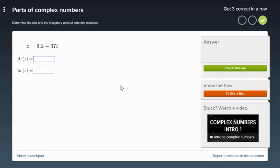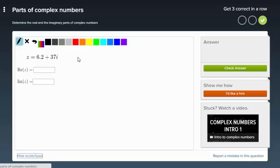But just to recognize them, the real part is the part that does not have an i next to it. So in this case, the number that does not have an i next to it is 6.2. So my real would be 6.2.